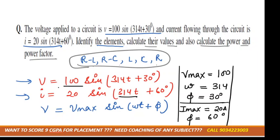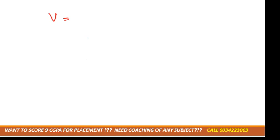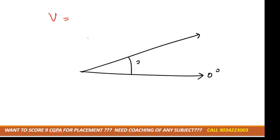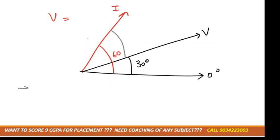Now we can draw the phasor diagram for voltage and current. The voltage angle is 30°, so we draw voltage at 30° from 0°. The current angle is 60°, approximately here on the diagram. So what is φ in this case? Which is leading — current or voltage?